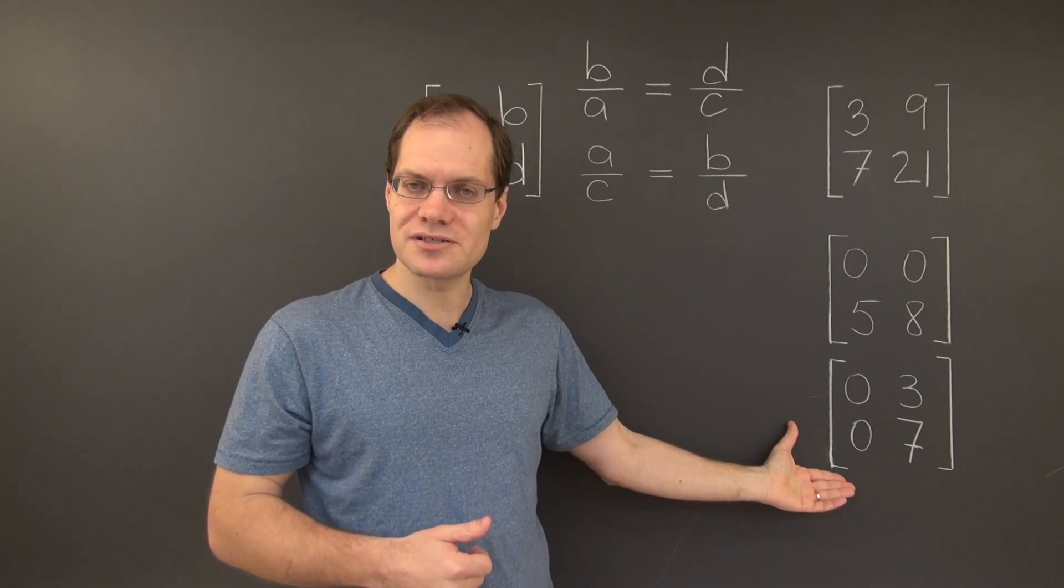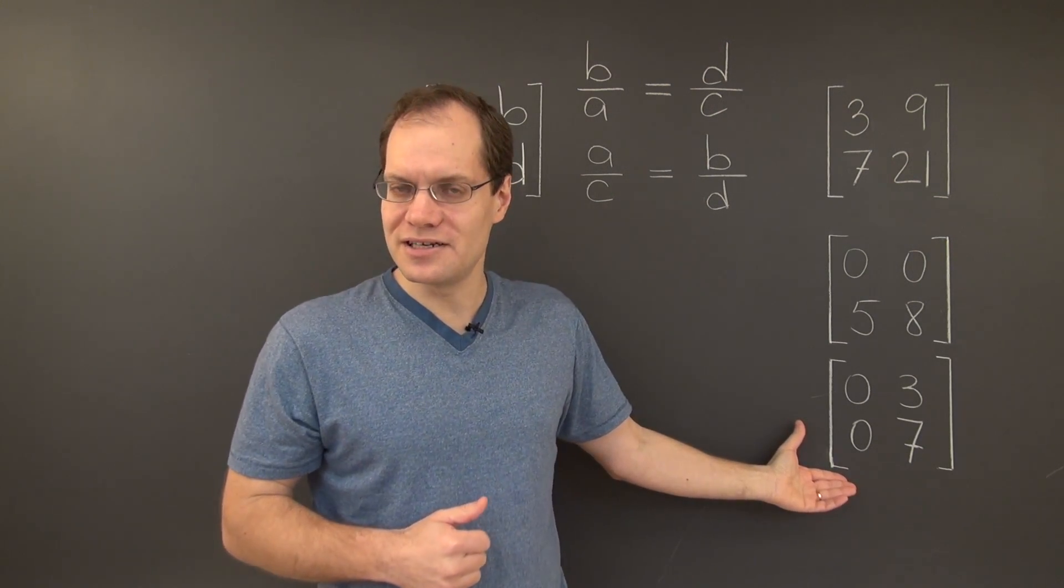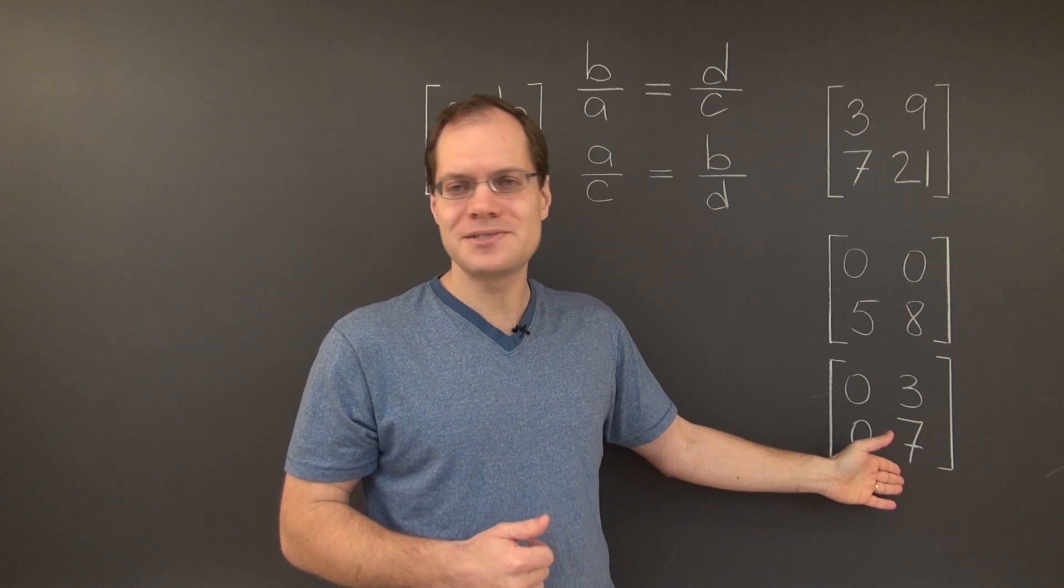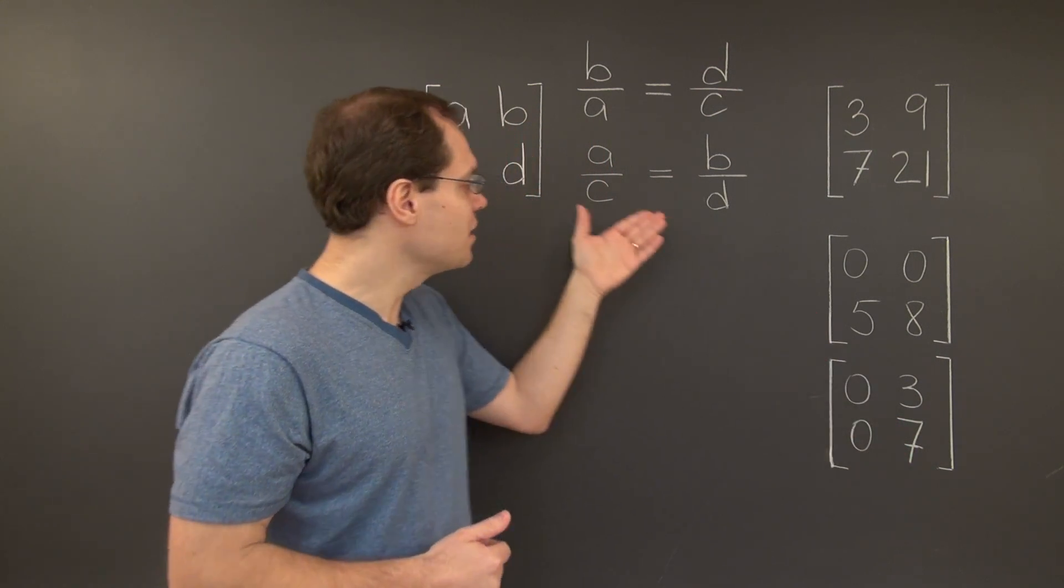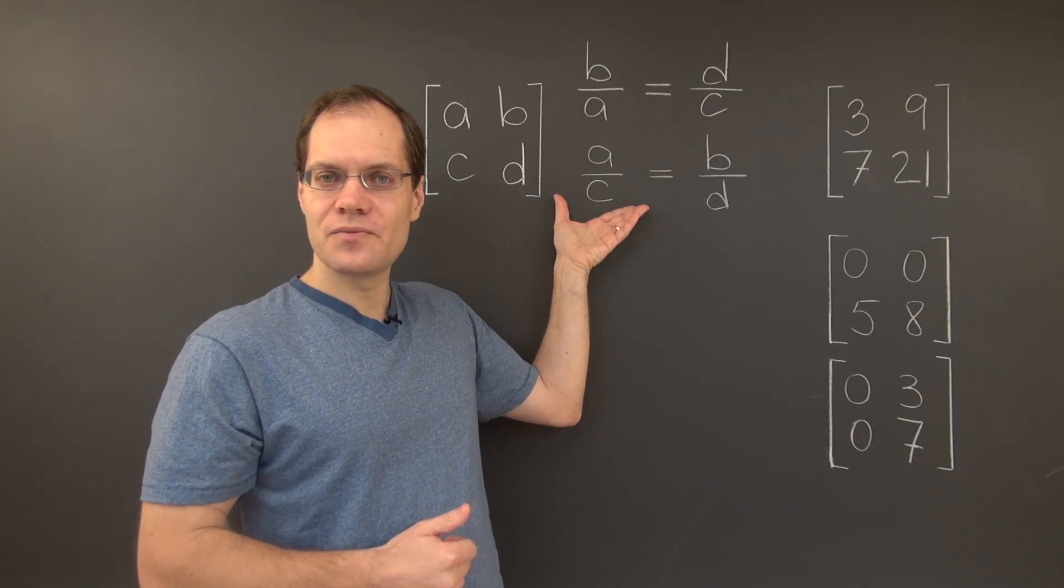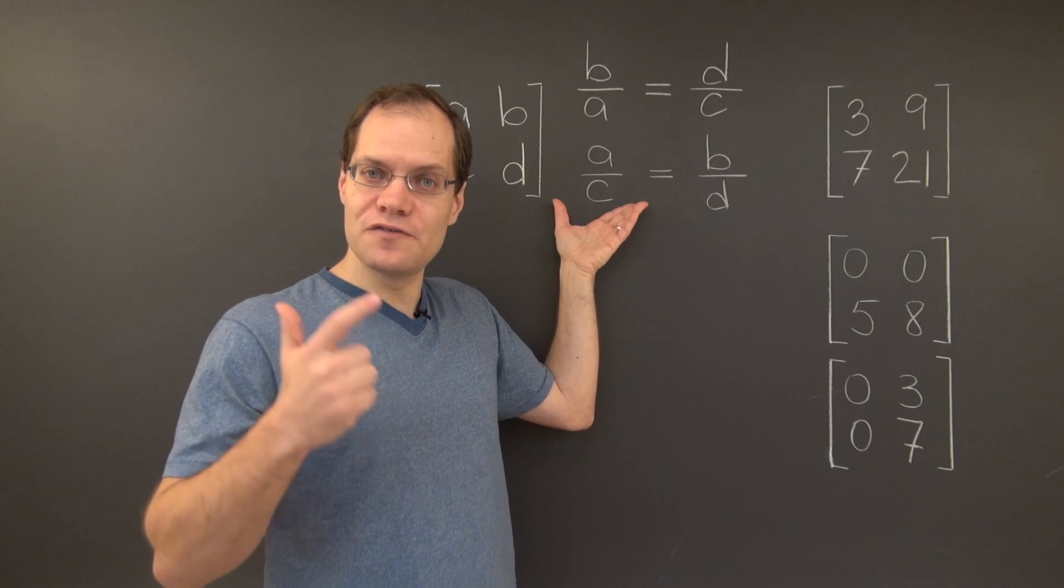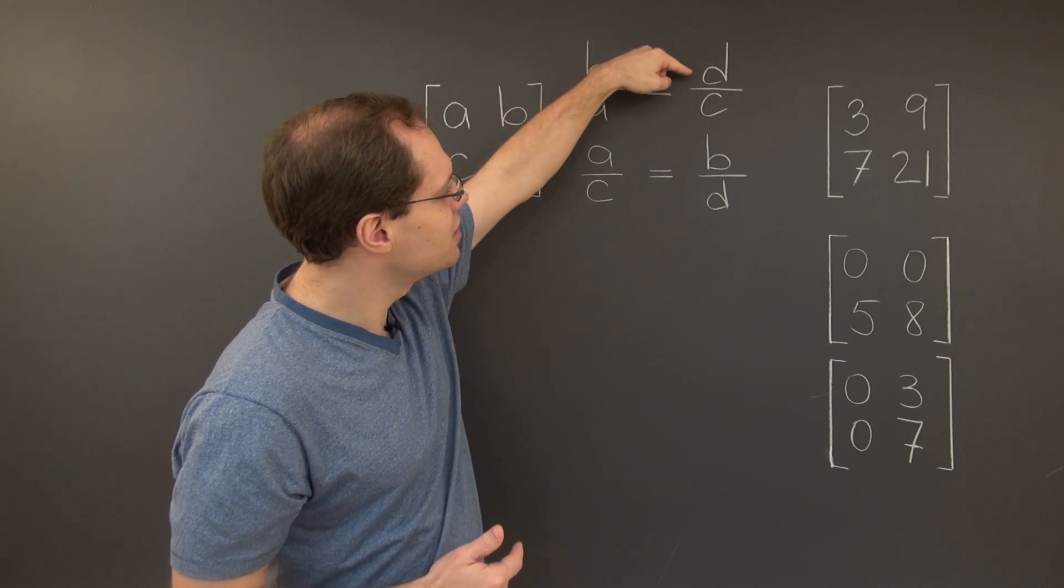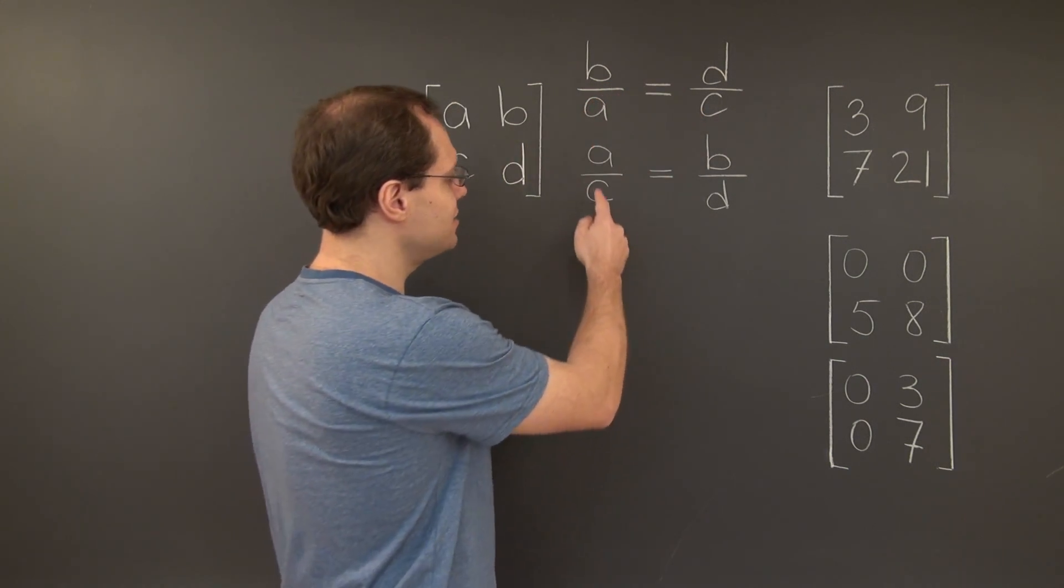If you consider this matrix, its columns are linearly dependent because the first column is 0 times the second column. Yet both of these criteria will not apply because they will involve division by 0. In this case, we'll have 3 over 0 compared to 7 over 0.